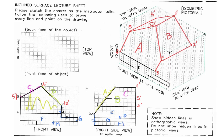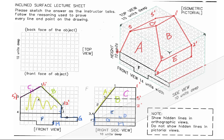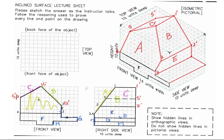Surface E is a normal surface, so check the height and the depth to complete surface E in the isometric view. Continue to surface D, which is also a normal surface — check the width and the depth to complete surface D. After surface D, continue with surface G, checking the depth and the height from the two given views. Don't forget visible surface H in the isometric view, which shows as a very short visible edge next to surface F.